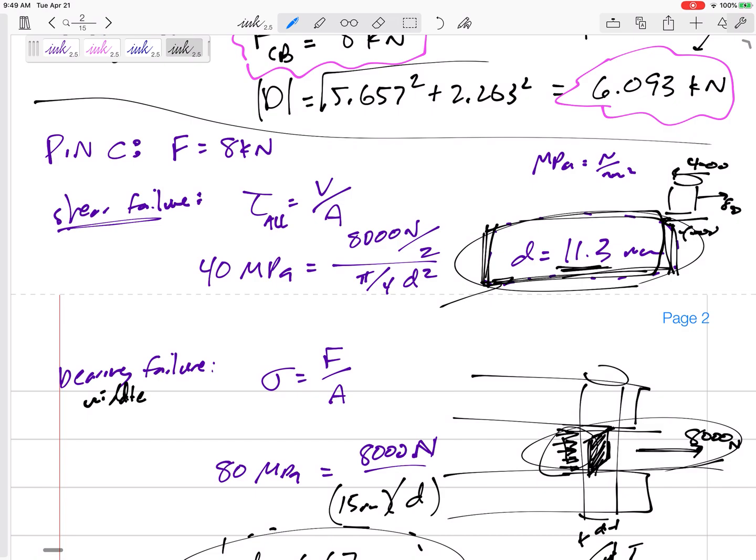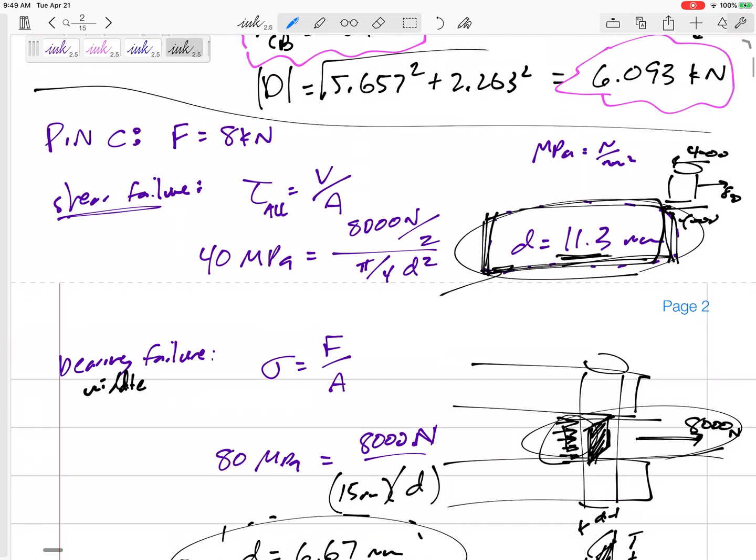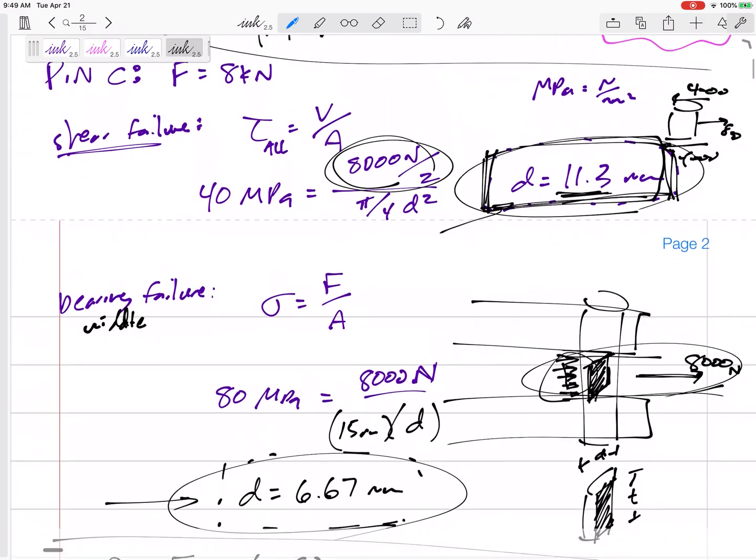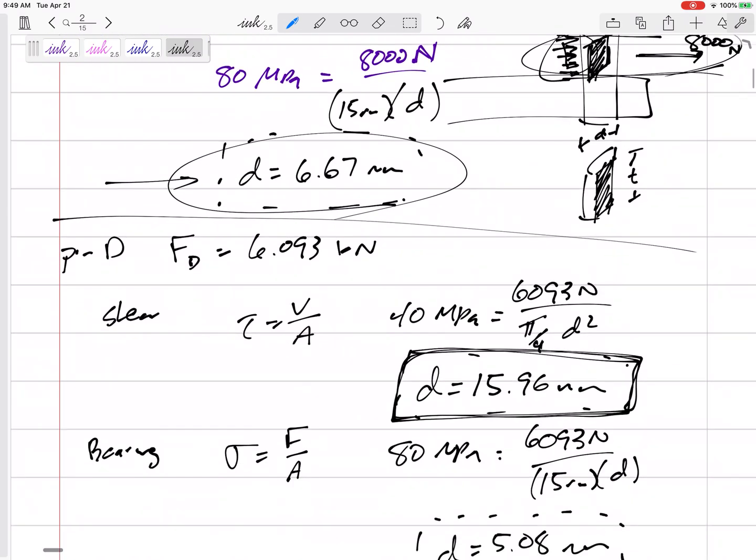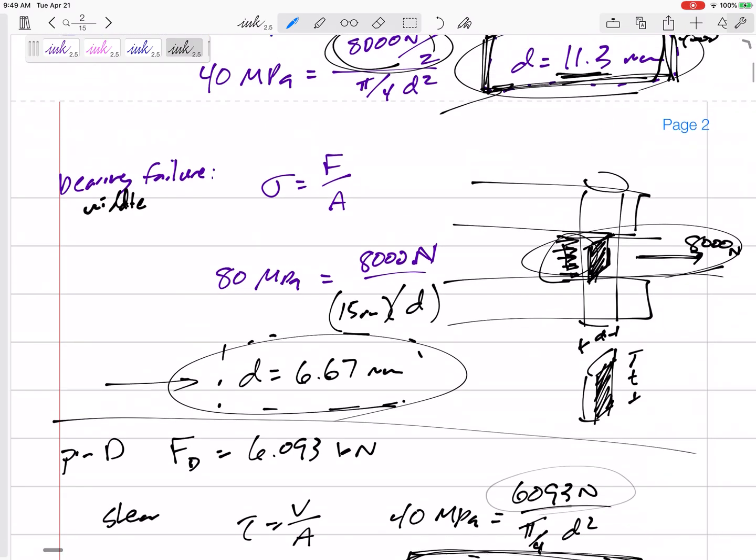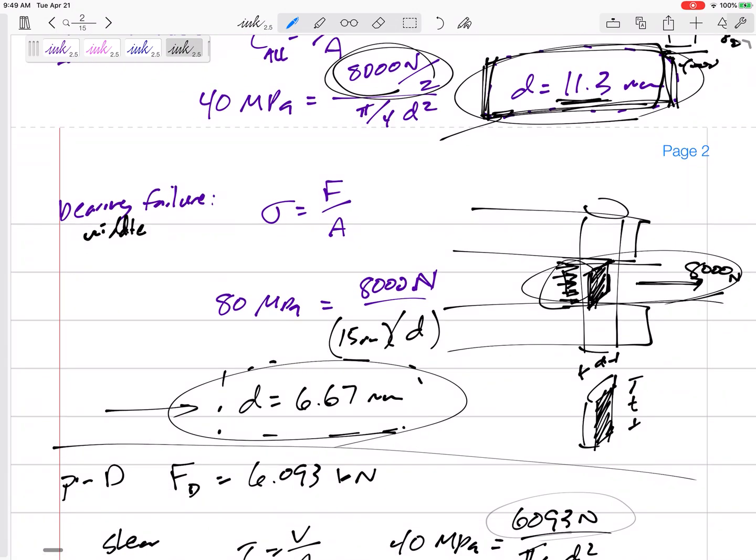Shear failure is V over A. If it's a double shear, you take that V and divide it by 2. If it's a double shear, you take that force and divide it by 2. Single shear, you don't divide it by 2.